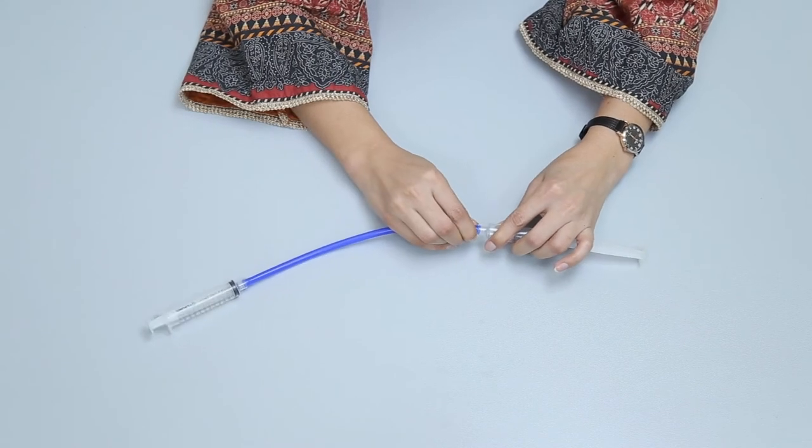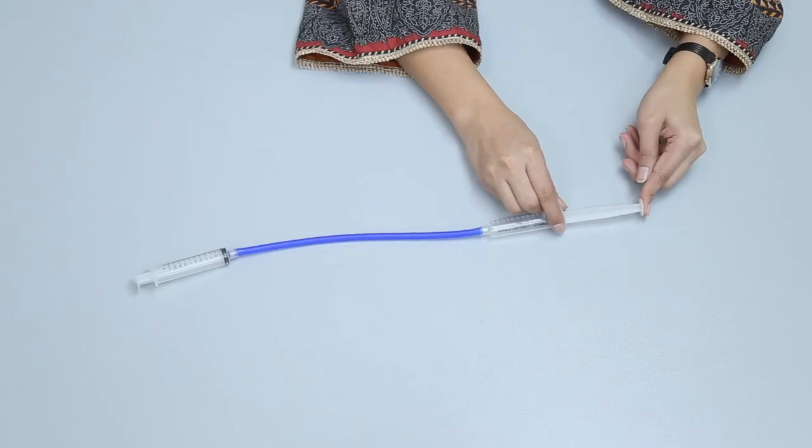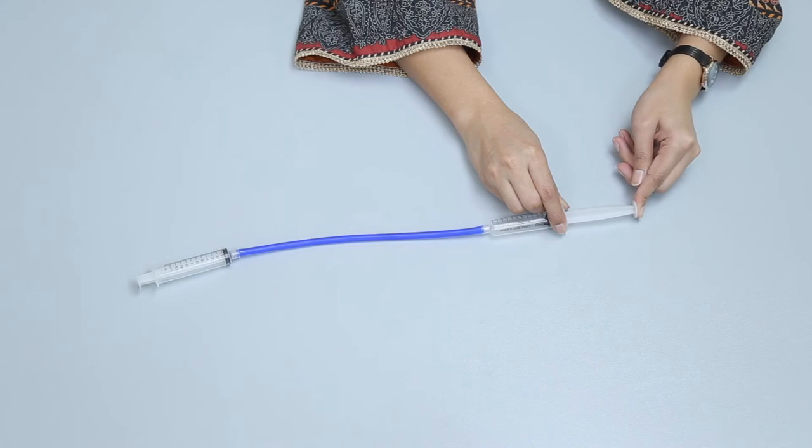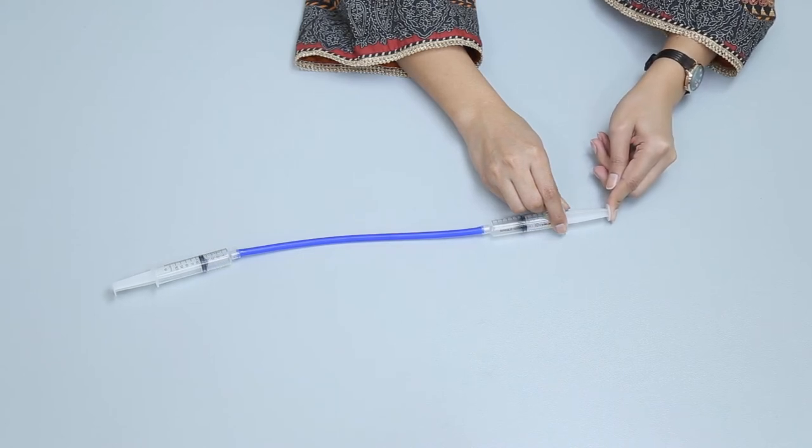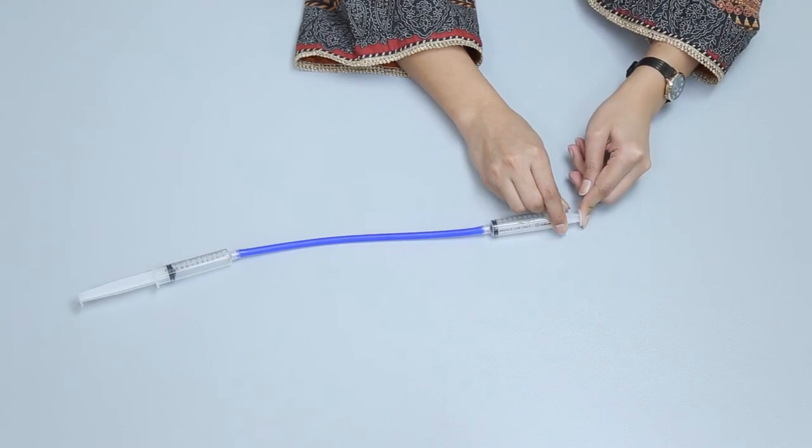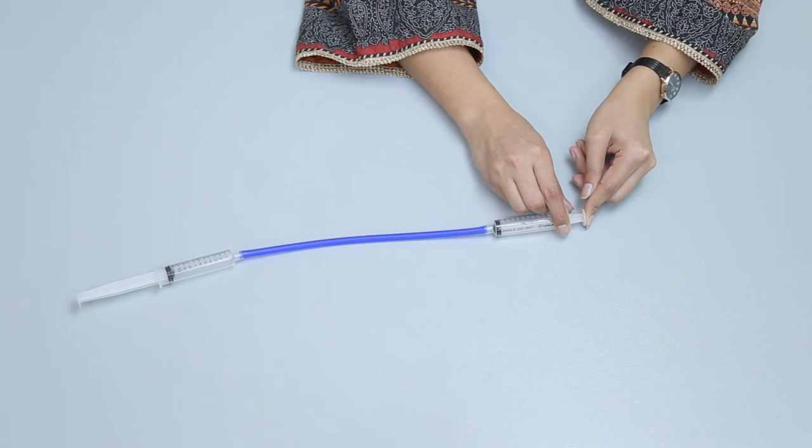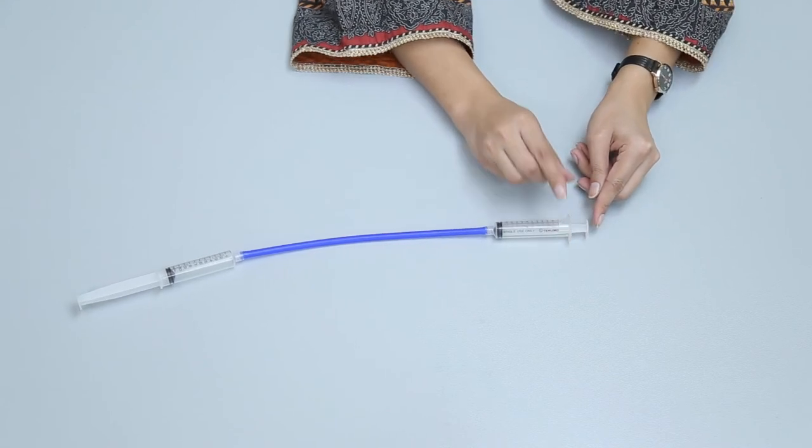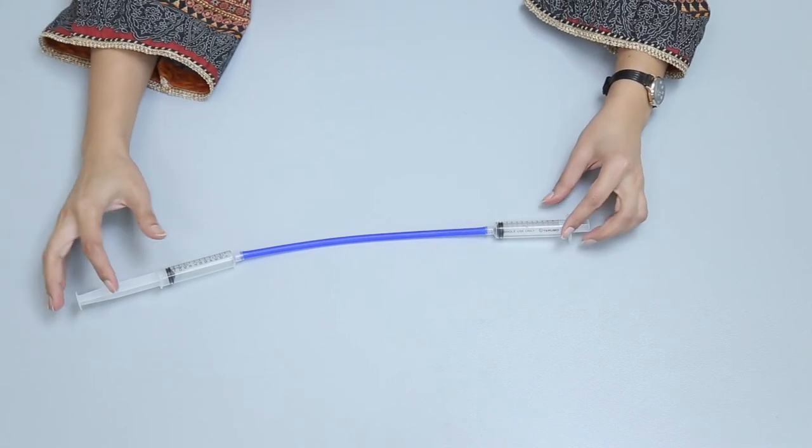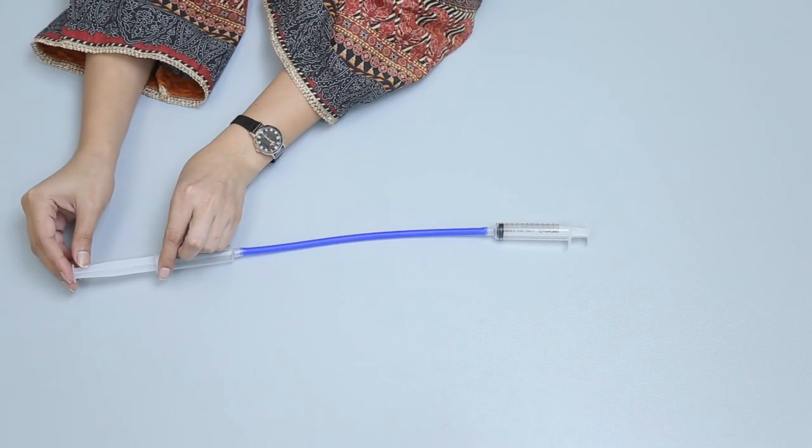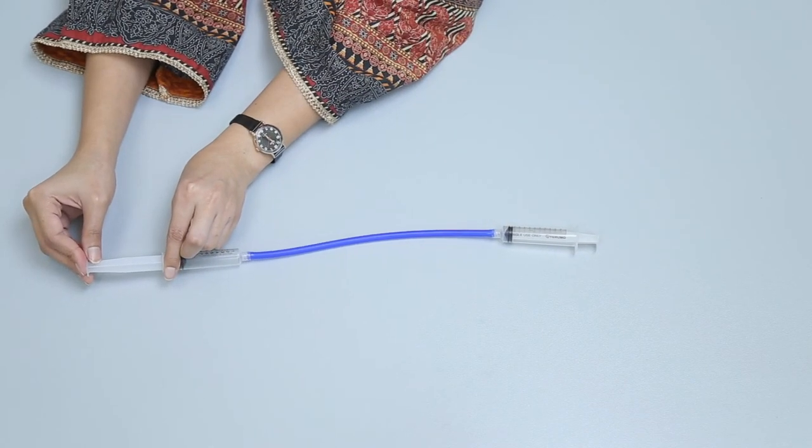Now apply push force on the open plunger. You will observe that by applying the push force, the plunger of the first syringe starts to open. This is because the air in the syringe pushes the plunger to open.